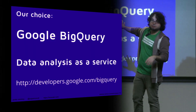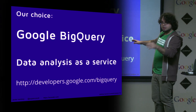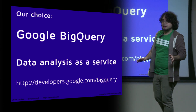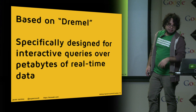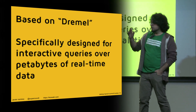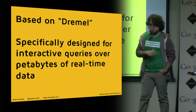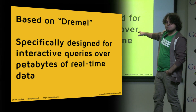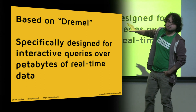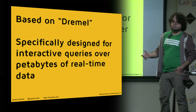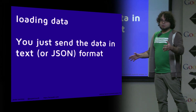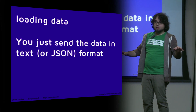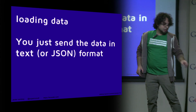So we found Google BigQuery, and this was amazing for us — it's exactly what we were looking for. It's like data analytics as a service: you put data there and it works. It's built for scale, based on something called Dremel, an internal Google tool they use for managing AdWords and similar things. It's designed for petabytes of real-time data. Loading data is easy — just send a text file or JSON, and within seconds you can already query it.